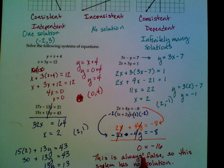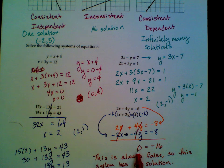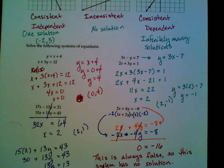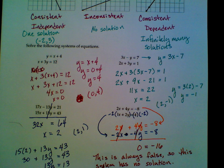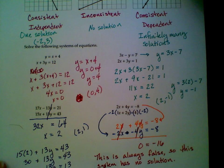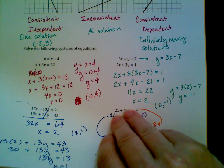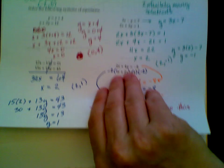So, this system has no solution. If I had gotten something that was always true, like 0 equals 0, then there would be infinitely many solutions. If we remember our types of systems that are listed up at the top of the paper. Actually, I think I have another copy here that I can bring down.